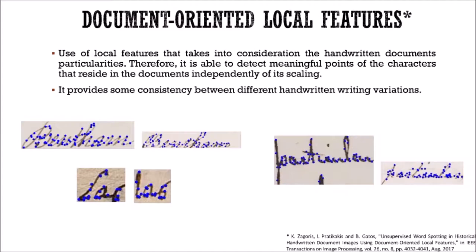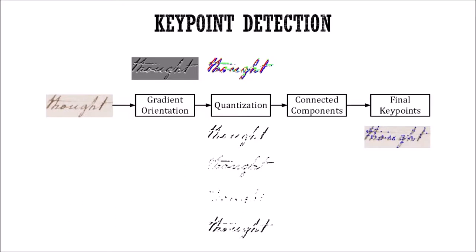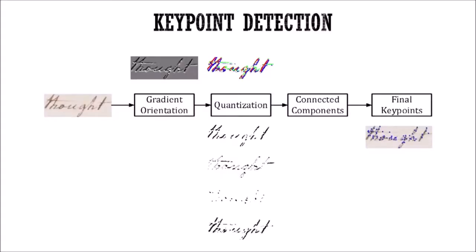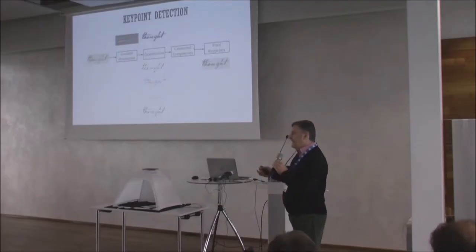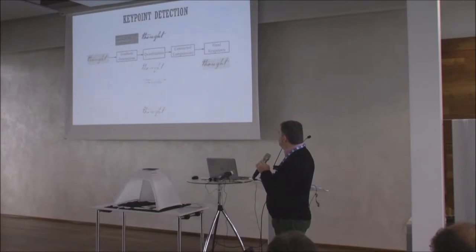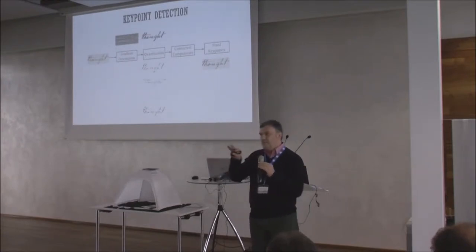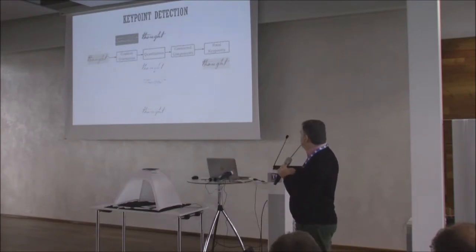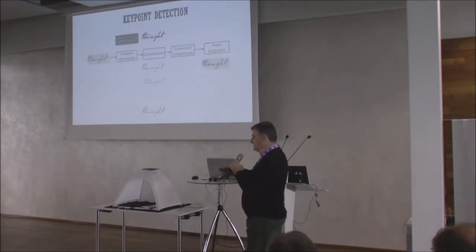The basic idea relates to using local information to model different words. Words can be written in different ways, and we define certain key points that identify similar structural points across different instances of the same word. Key point detection relies on gradient orientation, which is quantized. On the connected components related to the quantized levels, we define key points by taking the gravity center of each connected component.